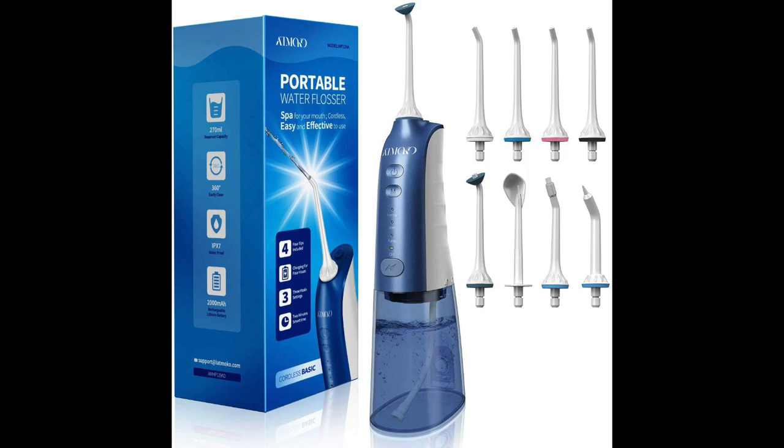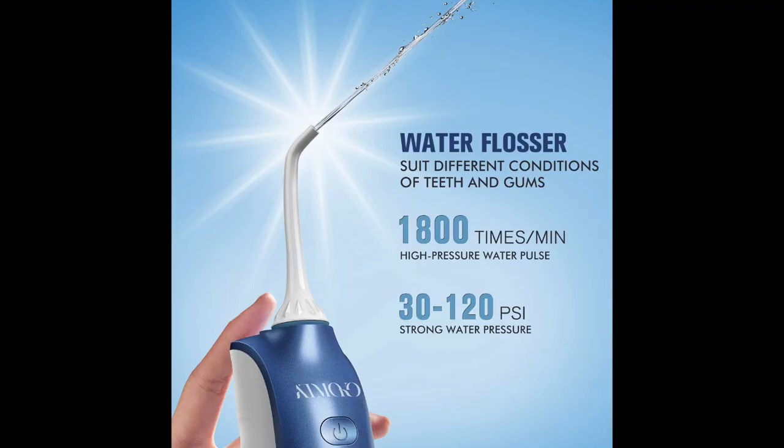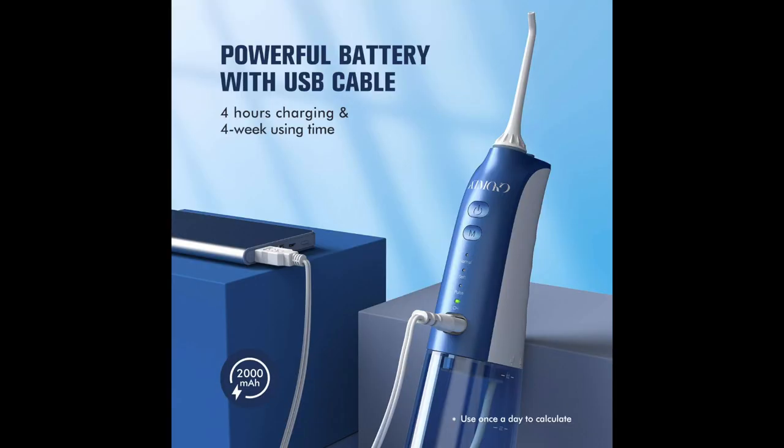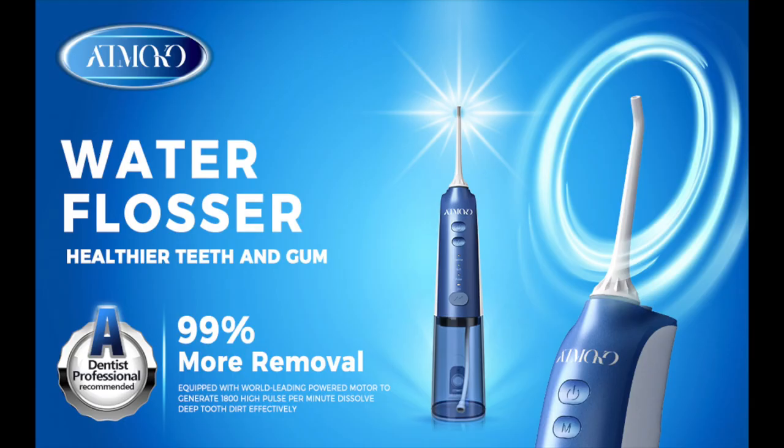Thanks for tuning into this review. This is Automato water flosser. We're going to do a full review and unboxing. This is really nice - 1,800 times per minute, 30 to 120 PSI, pretty powerful. Has three modes: normal, soft, and pulse, which I'll show you everything live. USB charge - four hours of charging gives you four weeks of use.